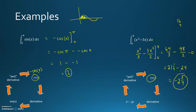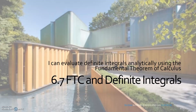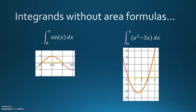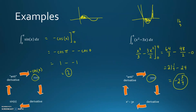Going back to the picture of this parabola, most of that area is below the x-axis with some bit above it. It makes sense that the answer to that integral would be negative because more of the area is below the x-axis.